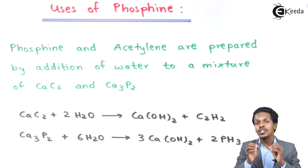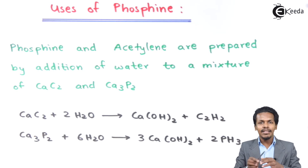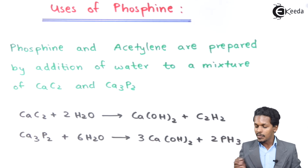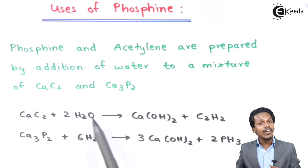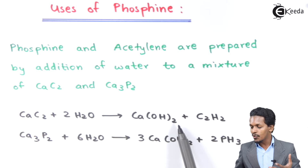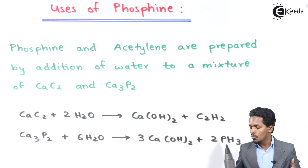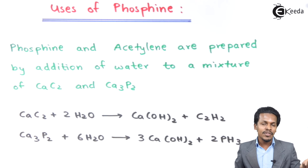These packed containers, consisting of a mixture of calcium carbide and calcium phosphate, are thrown into the sea. Whenever a rock is present, the container gets broken. The calcium carbide reacts with water to produce Ca(OH)₂ along with acetylene (C₂H₂), and the calcium phosphate reacts with water to produce calcium hydroxide along with phosphine (PH₃).